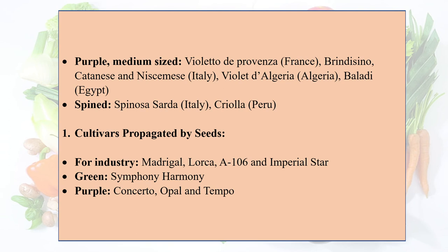Violato de Algeria and Baladi are purple medium-sized varieties. The spined globe artichoke variety is Spinosa Sardha and Creola from Peru. Cultivars propagated by seeds for industrial purpose include Mardigal, Lorca, A106, and Imperial Star. Green seed-propagated types are Symphony and Harmony; purple types are Concerto, Opal, and Tempo.